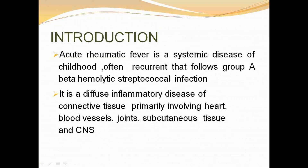Acute rheumatic fever is a systemic disease of childhood and the most common acquired heart disease. It usually follows infection caused by group A beta-hemolytic streptococcal infection. It is a diffuse inflammatory disease of connective tissue, primarily involving the heart, blood vessels, joints, subcutaneous tissue, and central nervous system.